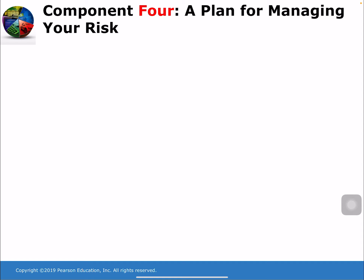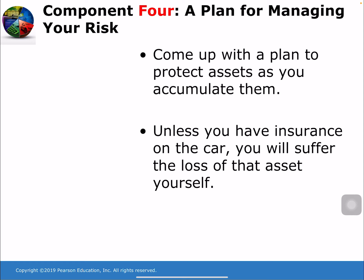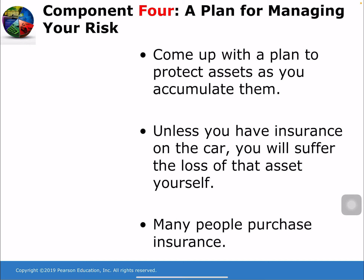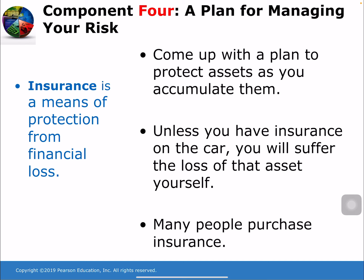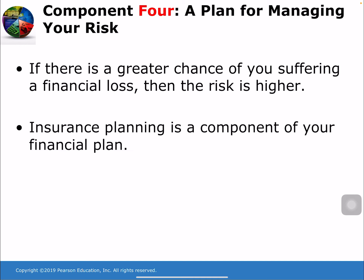Component 4 is a plan for managing your risk. As you accumulate assets, you will need to come up with a plan to protect them. For example, if you purchase a car and it is stolen or damaged in a parking lot, unless you have insurance, you will suffer the loss yourself — you are assuming the risk. Many people purchase insurance, which is a means of protection against financial loss. Risk is related to the likelihood of loss; the greater the chance of financial loss, the higher the risk. Insurance planning is a component of your financial plan — it determines the types and amount of insurance you need.